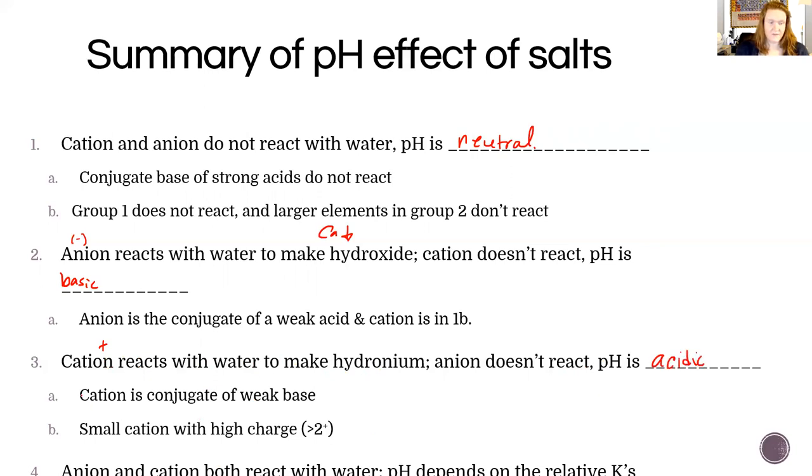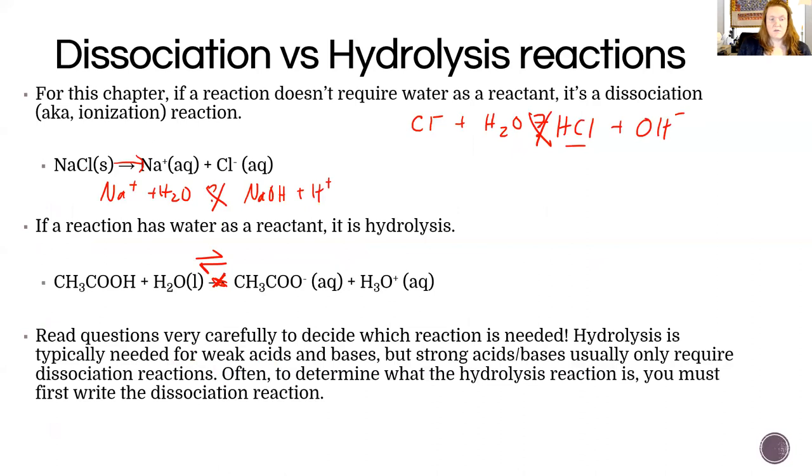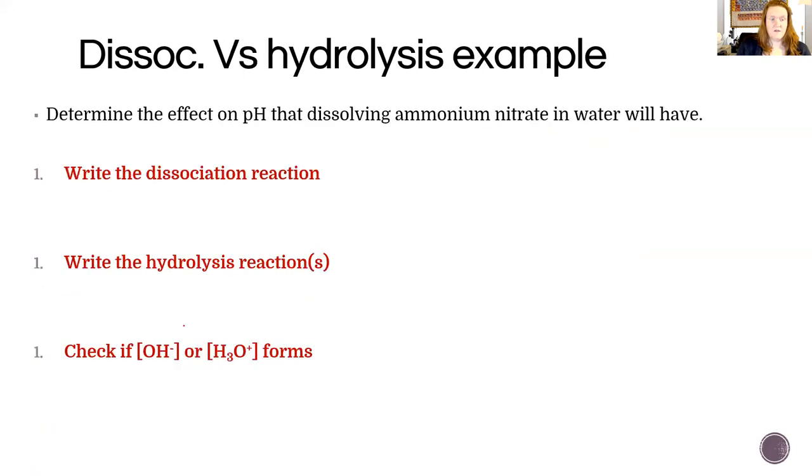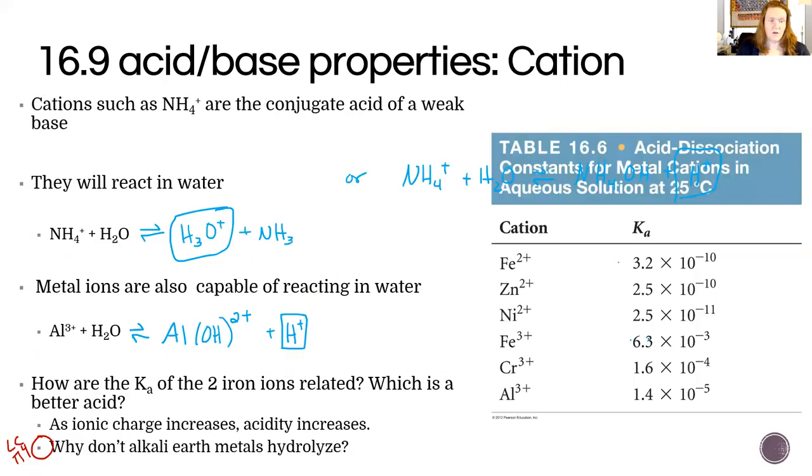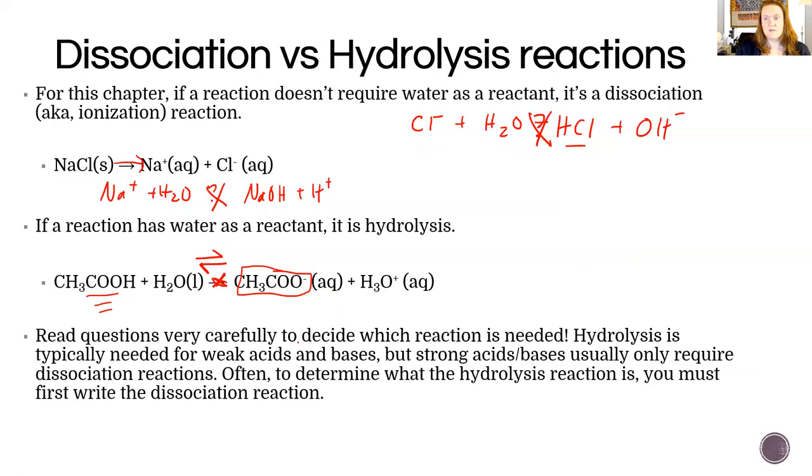These are the cases when that's going to happen: the cation is a conjugate of a weak base or it's a small cation with a really large charge. Acetic acid is a weak acid, you make acetate and hydronium ion so that's acidic. Aluminum, even though it doesn't have hydrogen in it, also steals a hydroxide and makes hydrogen ion, so both are cases where it would be acidic.